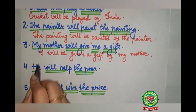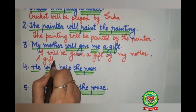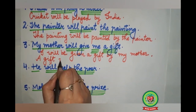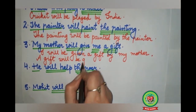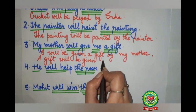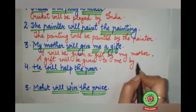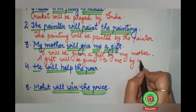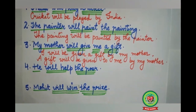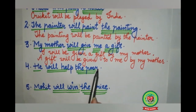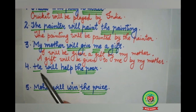In the second case, we take 'a gift' as the object. It becomes the subject in the passive voice. The sentence becomes: 'A gift will be given to me by my mother.' Full stop.